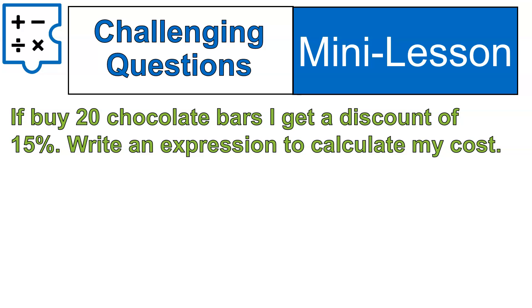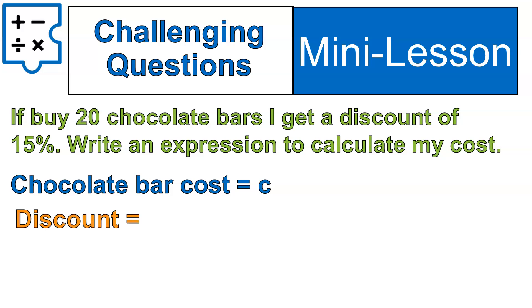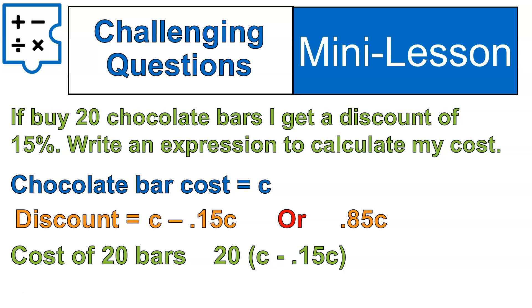Now, let's talk about another challenging question. If I buy 20 chocolate bars, I get a discount of 15%. So I'm going to write an expression to calculate my total cost. It's a little bit one step more complicated, but I'm going to start in the same way. I need to define a variable. Chocolate bar cost, I'm going to say C for chocolate. My discount. If I think about it, my discount is similar to what I did before. It's the cost of the chocolate bar minus 15% of the cost of the chocolate bar. I could write this down as 85% of the overall cost, or I can write it as cost minus 15% of the cost. Both are correct. Both are fine.